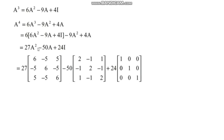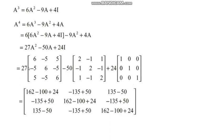To find A⁴, we already have A³ = 6A² − 9A + 4I from the matrix polynomial equation. Multiplying throughout by A: A⁴ = 6A³ − 9A² + 4A. Substituting A³ = 6A² − 9A + 4I, we get A⁴ = 6(6A² − 9A + 4I) − 9A² + 4A = 36A² − 54A + 24I − 9A² + 4A = 27A² − 50A + 24I. The first row first column element is 27×6 − 50×2 + 24 = 162 − 100 + 24 = 86.